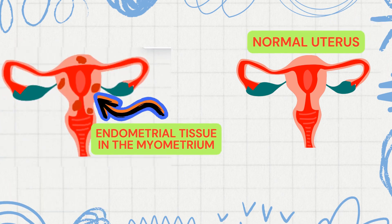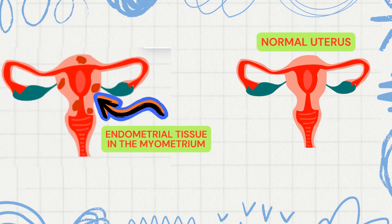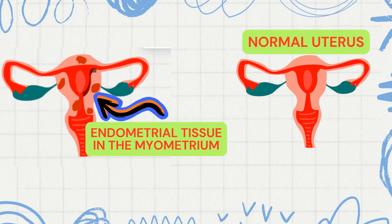Ideally, the endometrium is only supposed to be found in the innermost layer of the uterus. It creates problems when it infiltrates into other areas of the uterus or anywhere in the pelvis — specifically, infiltration into the musculature of the uterus or myometrium. This infiltration of endometrial tissue into the myometrium is called adenomyosis.